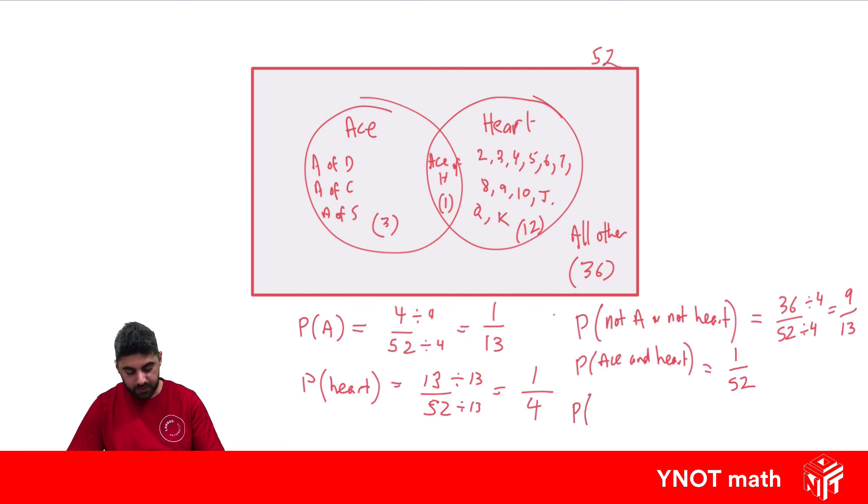And finally, what's the probability that it's a heart that's not an ace? Well, all hearts that aren't aces are just over here. And we know there's only 12 of those. So that's 12 out of 52. And they're both divisible by 4, which gives us 3 out of 13. So Venn diagrams are really useful for when we have things that have overlapping categories.